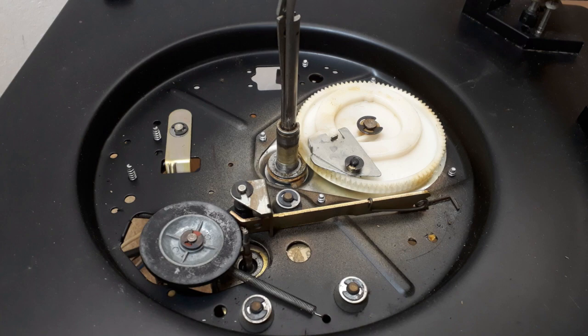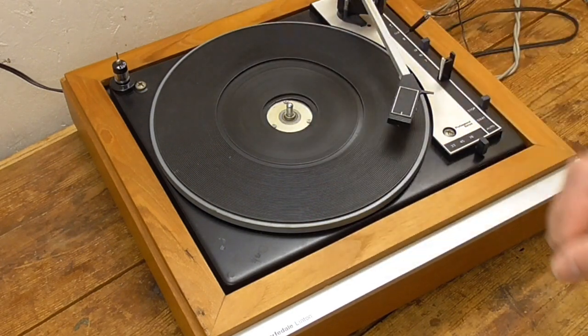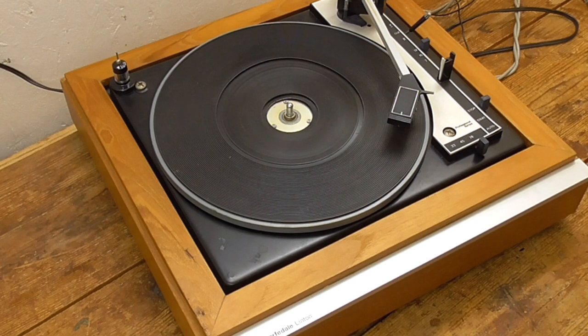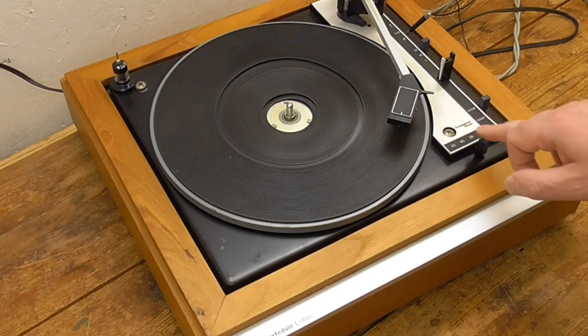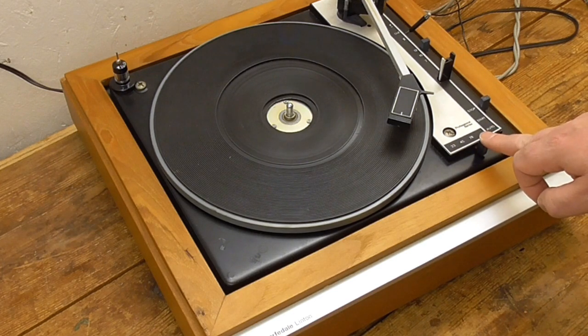Now, this is of a similar vintage. It's not a changer. It's got none of the changer mechanism here, but it's also similar age, but rather better built, actually. And it's got the 78 speed, which interests me a lot more.